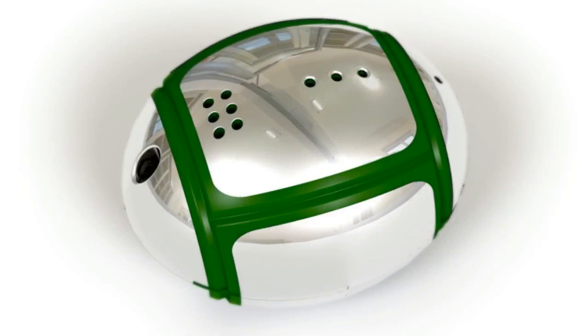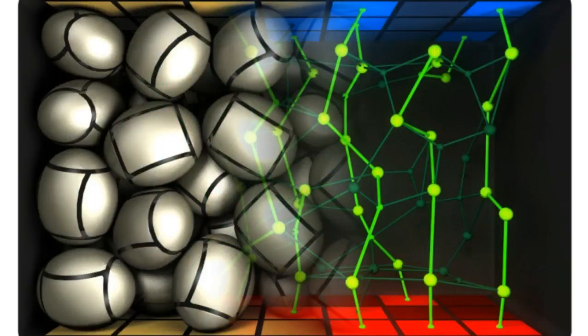Instead of a traditional, permanent battery pack, EV owners would fill onboard containers with a number of cell modules, which fall randomly into place.